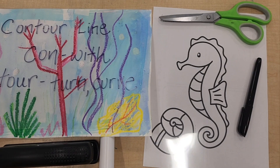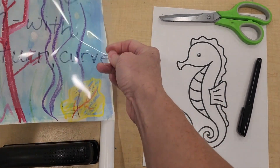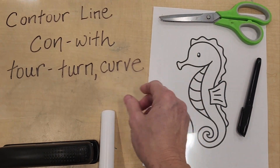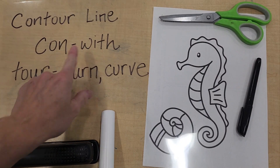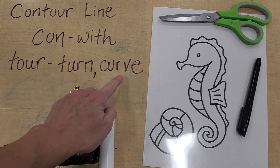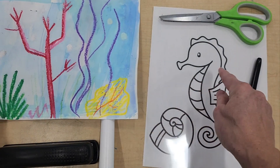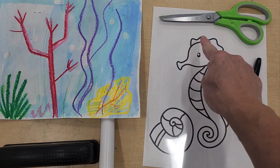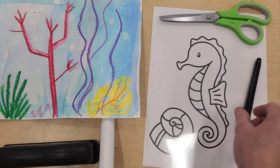Hi friends, today we are going to work with contour lines. So first we need to know what that means. Contour line — con means width, tour is turn or curve. So when we draw a contour line we're drawing all of the outside lines and the inside lines.